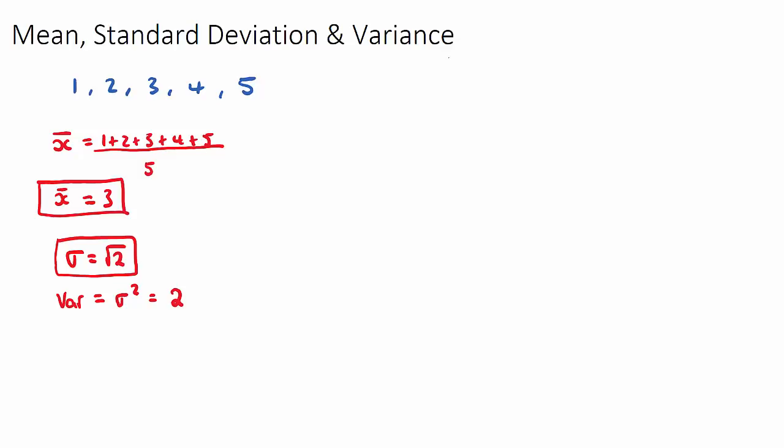Okay, now what common IB questions then ask is they say, if this original data set, if some constant value was added to all of the terms. So a constant value of, let's say 10, is added to every term.